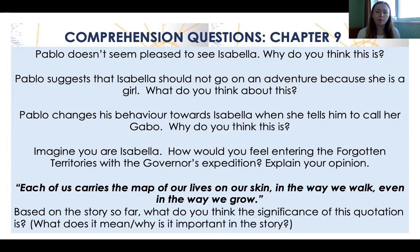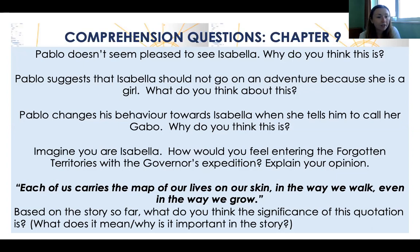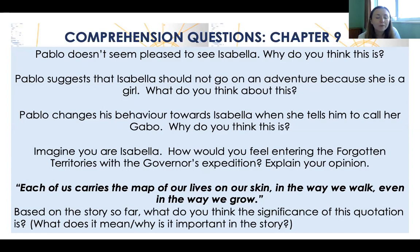Think more generally about what their relationship is and why there's a slight difference in the way they behave with one another. Imagine you are Isabella — how would you feel entering the forgotten territories with the governor's expedition? Try and put yourself in her shoes; there are lots of different ways she'd be feeling — definitely mixed emotions. Finally, going back to the quote from the back of the book: 'Each of us carries the map of our lives on our skin, in the way we walk, even in the way we grow.' Based on the story so far, what do you think the significance of this quotation is?